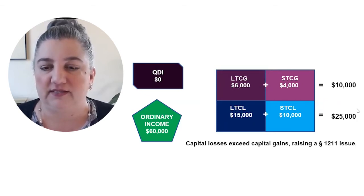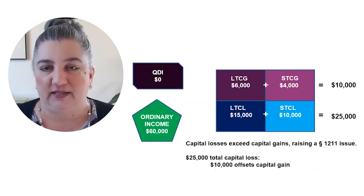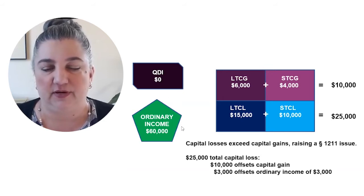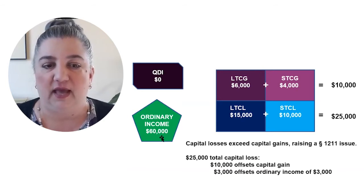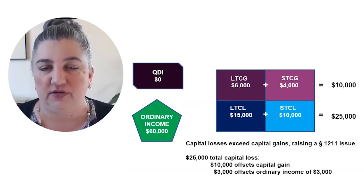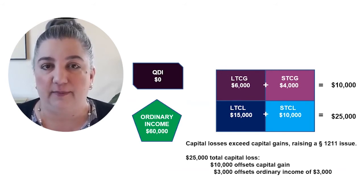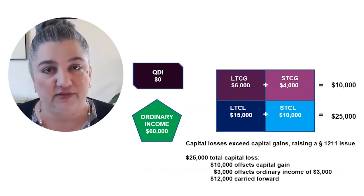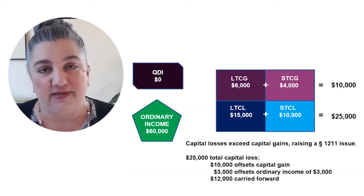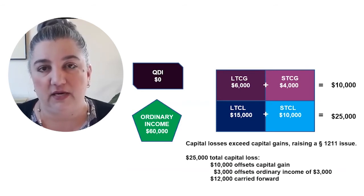The capital losses of $25,000 are first deductible to the extent of the capital gains, and then $3,000 more can be offset against ordinary income. The taxpayer here has $60,000 of ordinary income, which is ample to deduct a full $3,000 of the remaining capital losses. So in total, the taxpayer can deduct $13,000 of the capital losses this year. $12,000 of capital losses are disallowed by Section 1211, and they can be carried forward to the following year under Code Section 1212.